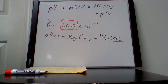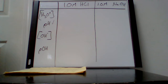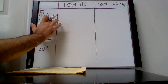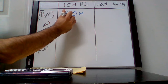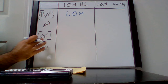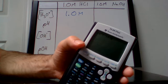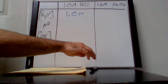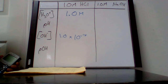Now I'll go through the chart to help you understand what these different values give us. Starting with our 1 molar HCl — strong acid — so our H3O+ concentration is also 1.0 molar. For the OH- concentration, we take our Kw value of 1 times 10 to the negative 14 divided by our H3O+ concentration of 1, giving us 1.0 times 10 to the negative 14 for the OH- concentration.